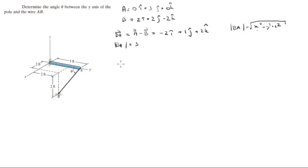Now what you want to do is the dot product between negative 2i plus 1j plus 2k and the unit vector in the y-axis, which has a magnitude of 1, dot 1j.